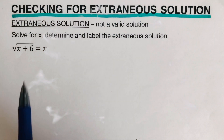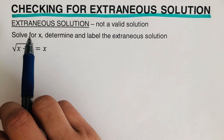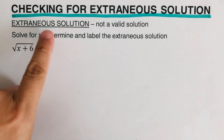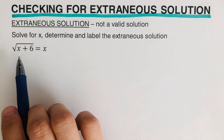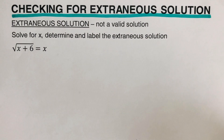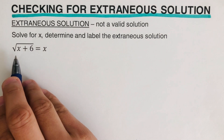Hello everyone. In this video we will be checking for extraneous solutions. An extraneous solution is not a valid solution, which means that when we do the algebraic method it seems like it worked, but when we check it does not really work. That is what we call an extraneous solution. For x, determine and label the extraneous solution. In order to solve this, the first step is to isolate the squared expression on one side of the equation, then square both sides, make one side equal to zero, and solve.